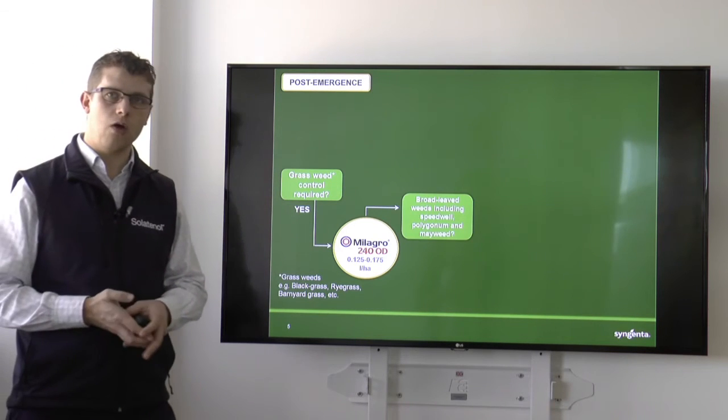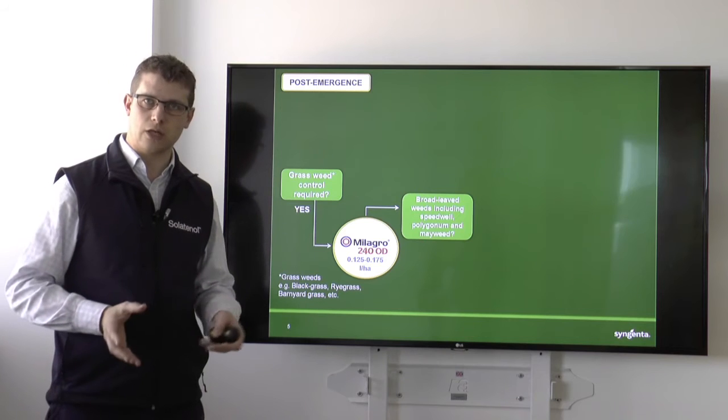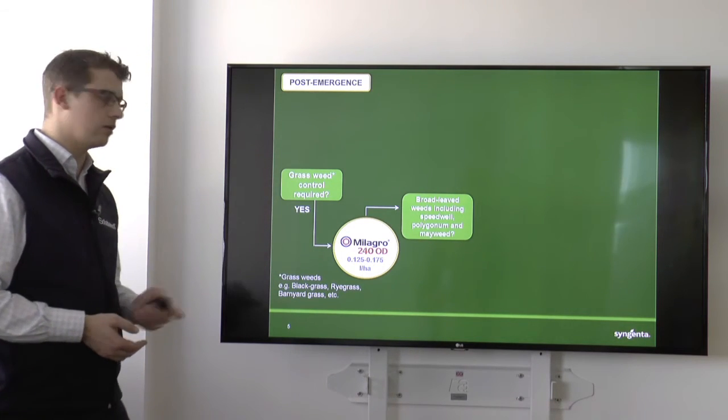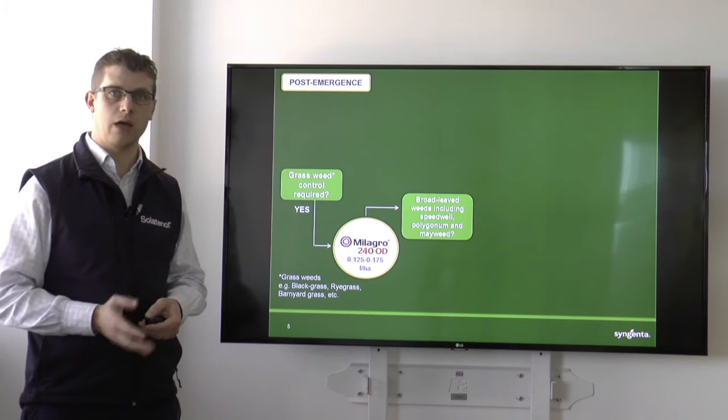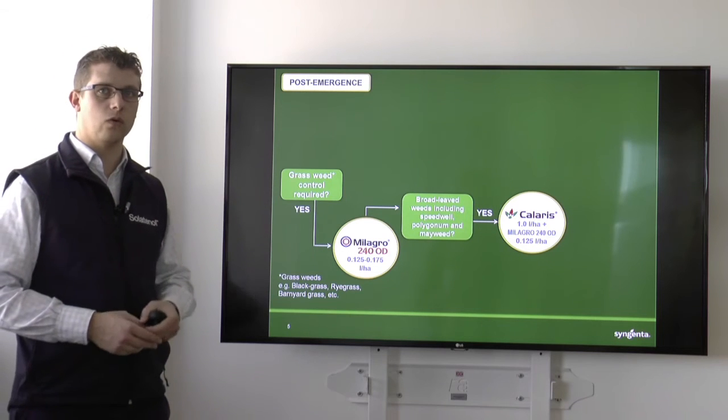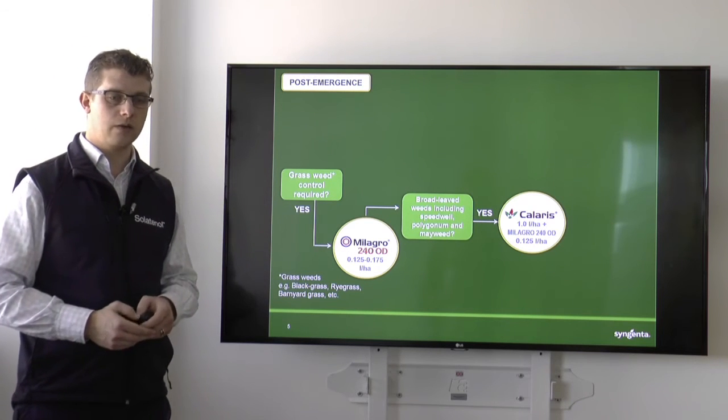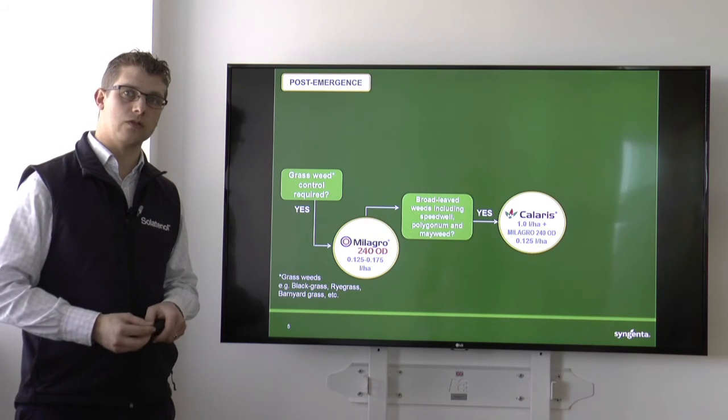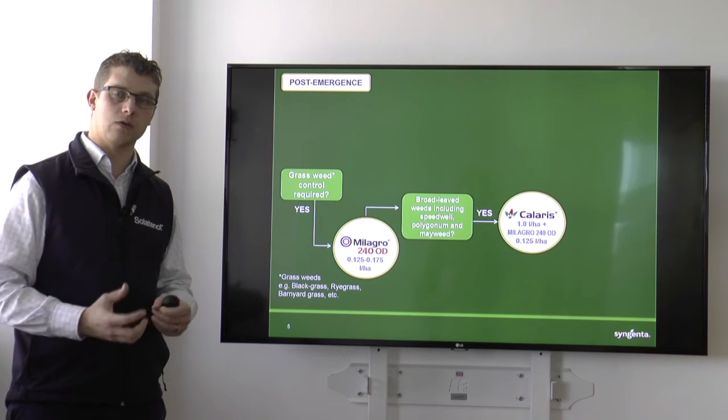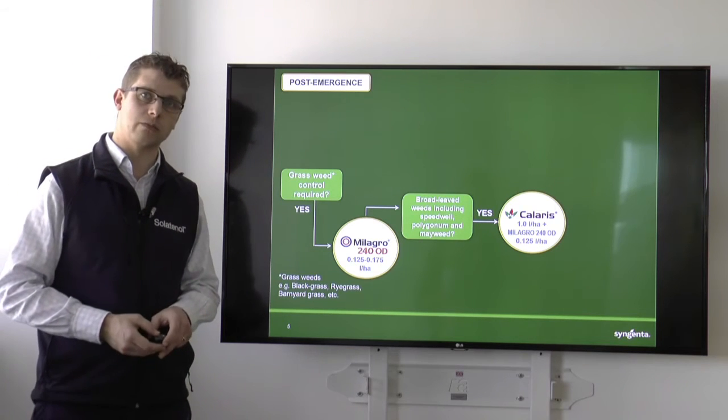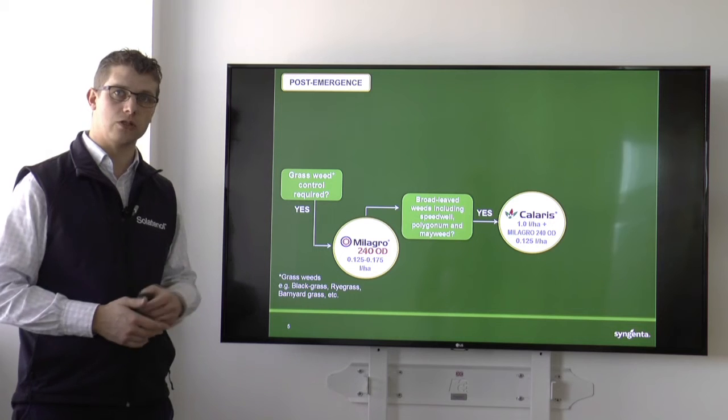If, however, we want to open out or broaden the spectrum of weeds controlled, so taking in some broadleaf weeds, including your speedwells, your polygonums, your mayweeds, etc., then our recommendation would be for a litre of Kolaris, plus keeping your Milagro in there at 0.125 litres a hectare to keep your grass weed control. And that is going to give you probably the broader spectrum of weed control post-emergence from our stable.